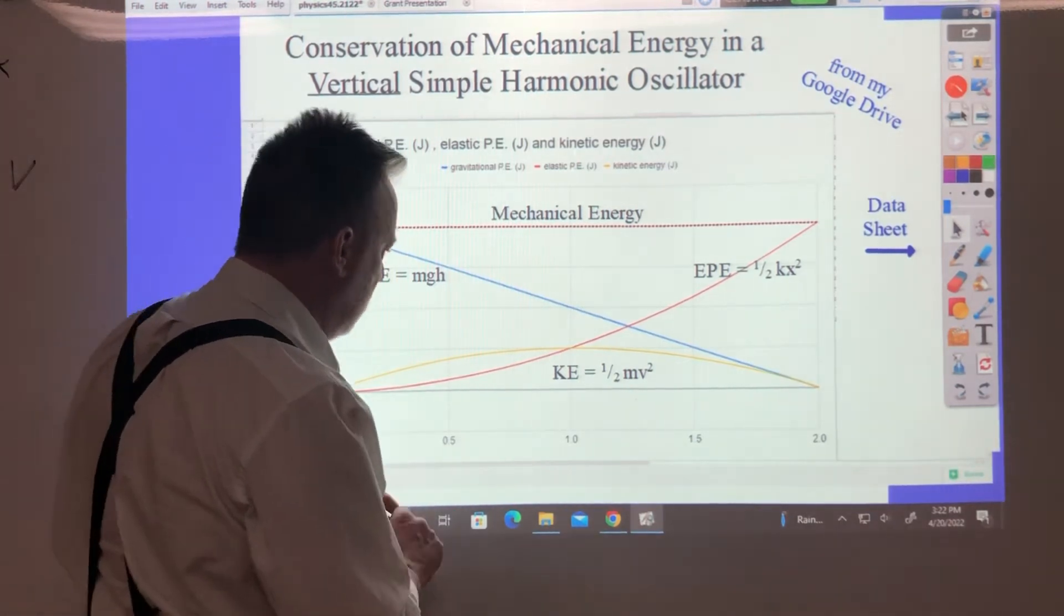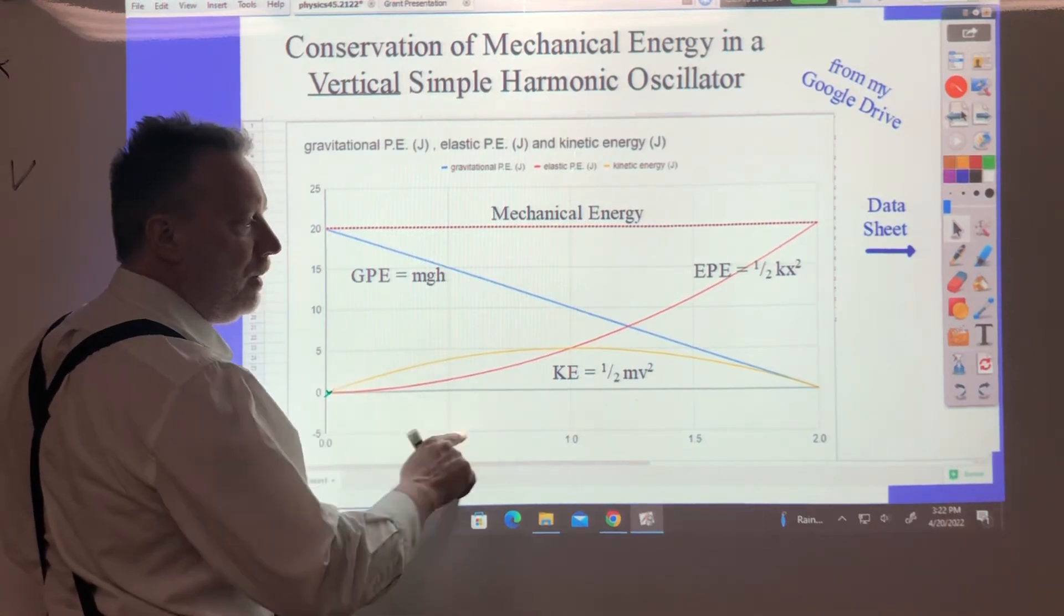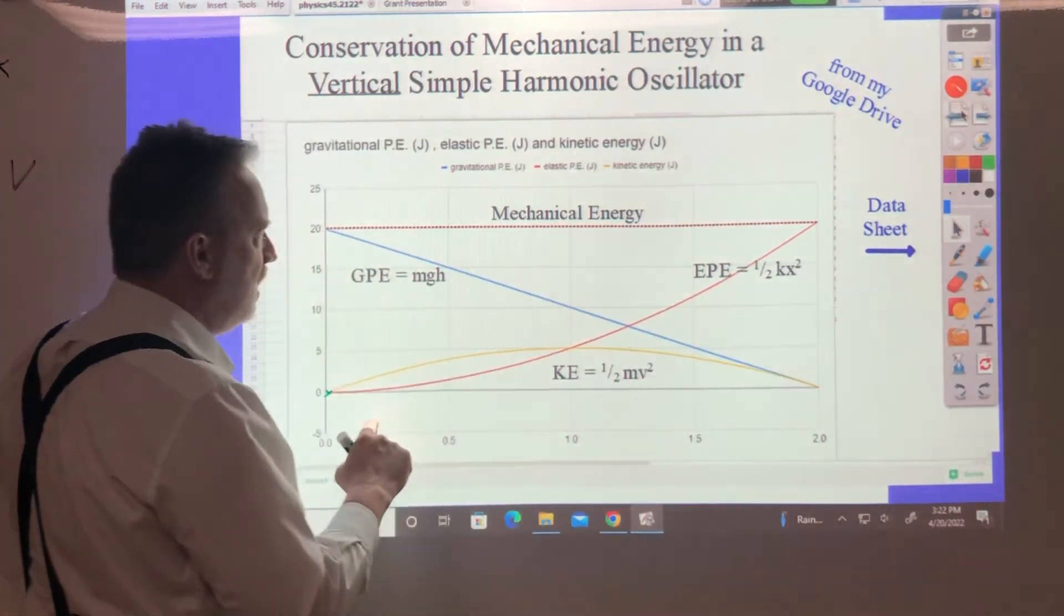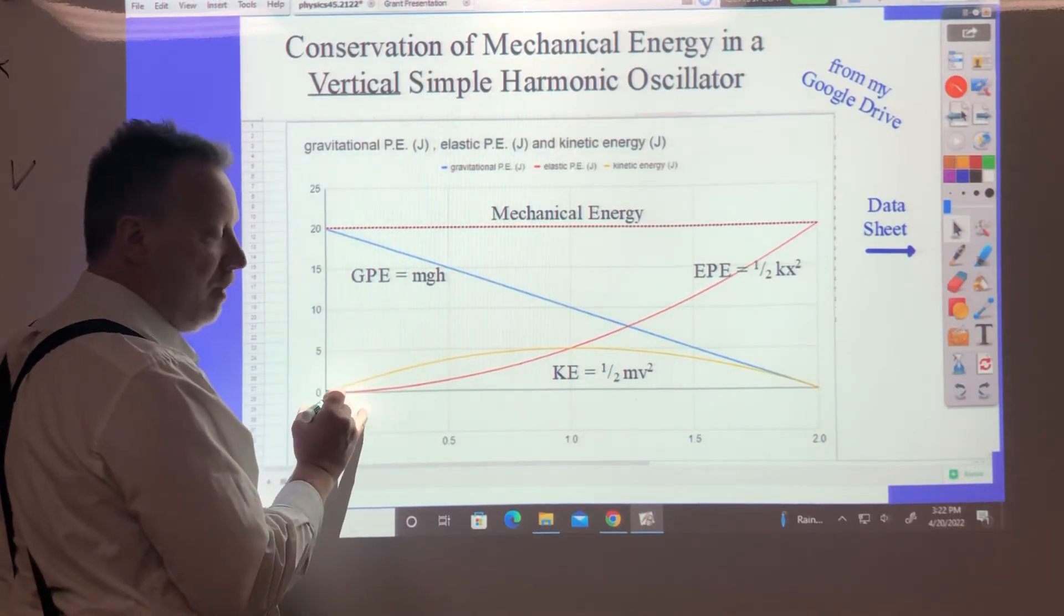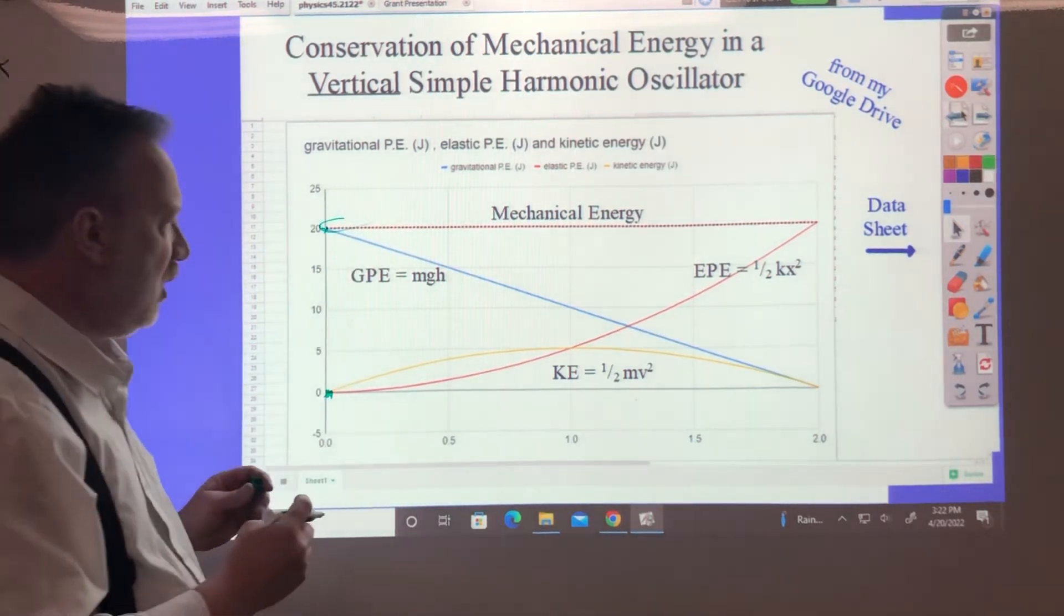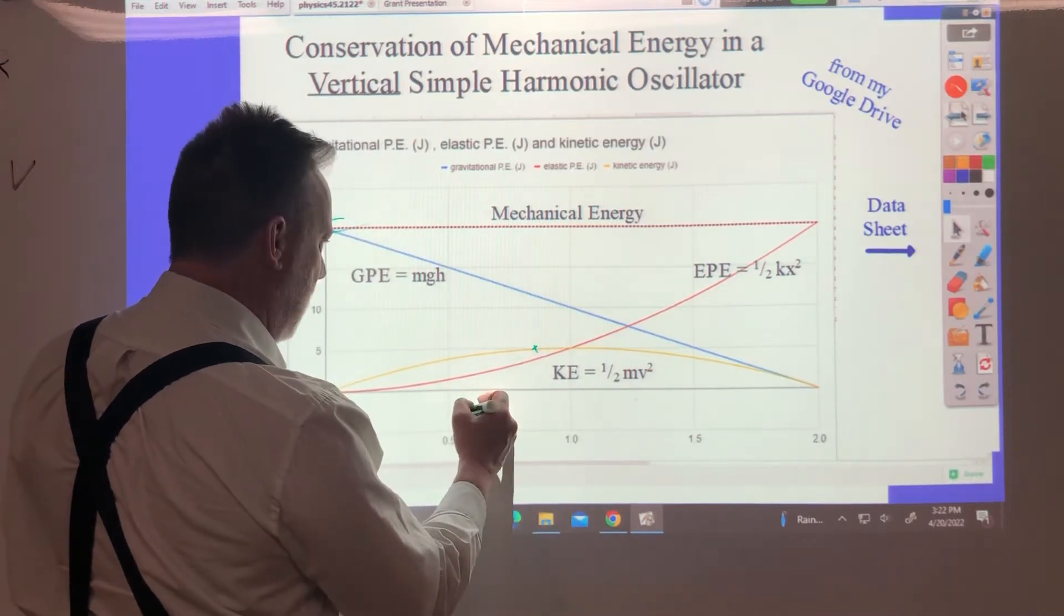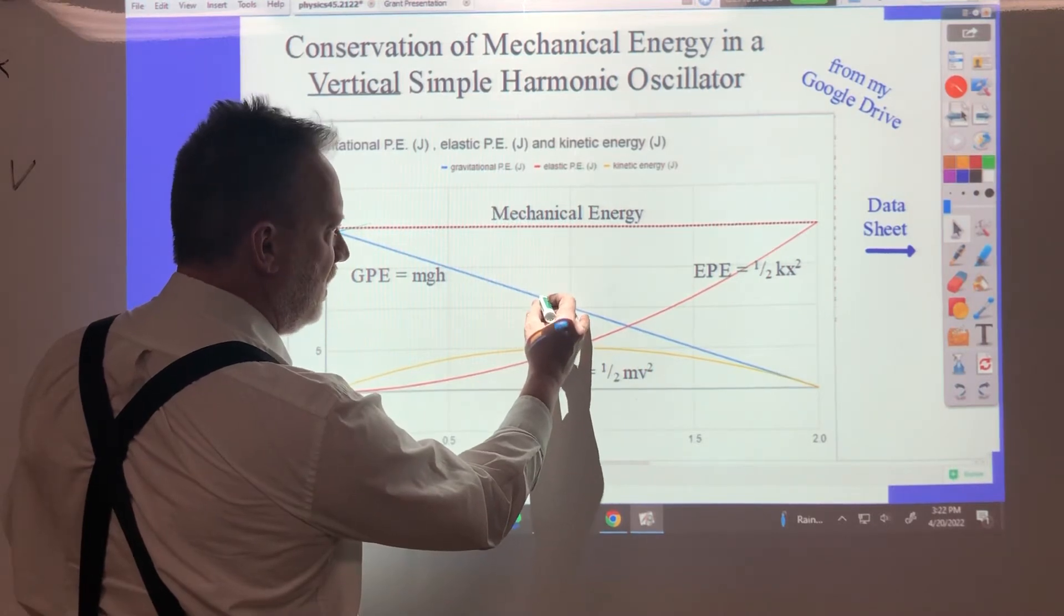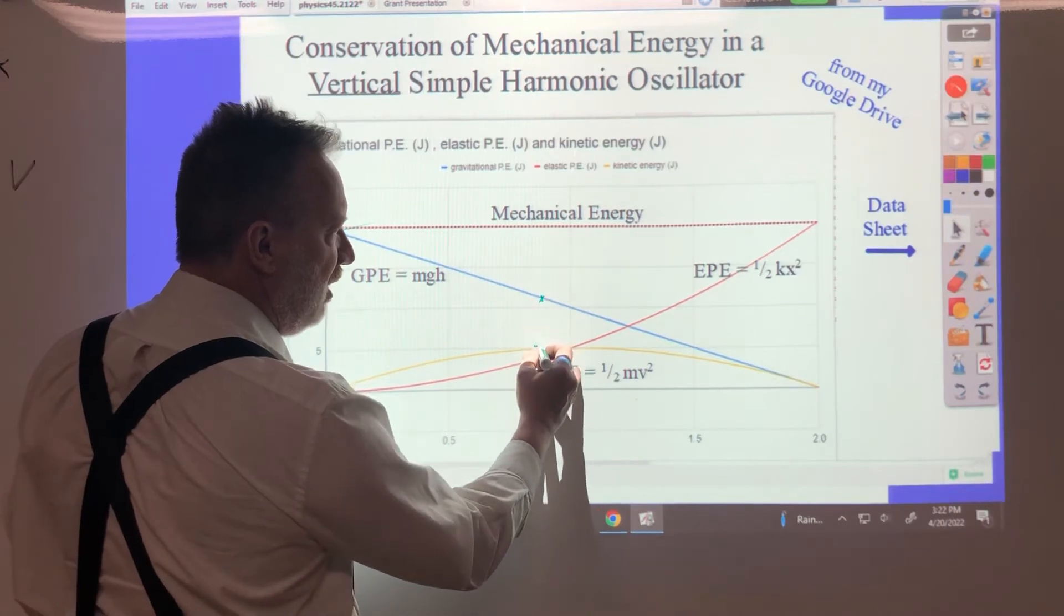If you add at any point the kinetic energy, which is zero here - you see kinetic energy is this yellow line, the elastic potential energy is this red one, and the gravitational potential energy is this blue one - you always get the mechanical energy, the combination of the three. Zero plus zero plus twenty gives me that mechanical energy. If you come in here I've got like five, this is like four, and this is eleven. Four and eleven is fifteen, and five is twenty.